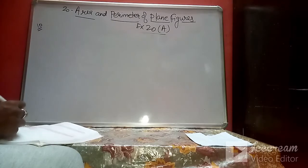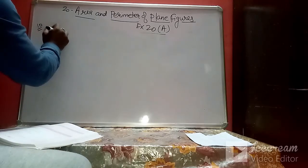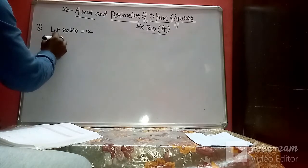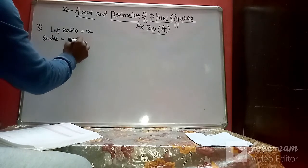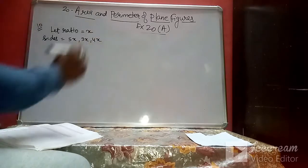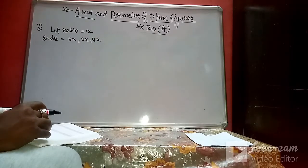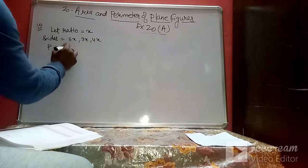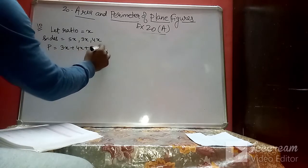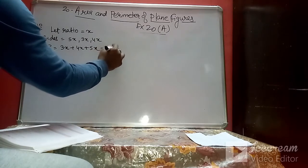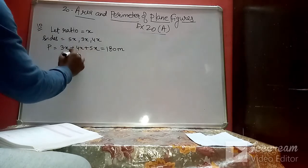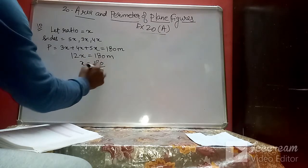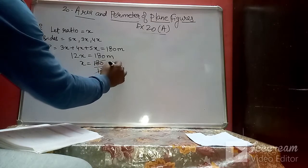In question 10, the sides of a triangular field are in the ratio 5:3:4 and its perimeter is 180 meters. We assume the ratio equals x, so sides are 5x, 3x, and 4x. Perimeter: 3x + 4x + 5x = 180, giving 12x = 180, so x = 15 meters.